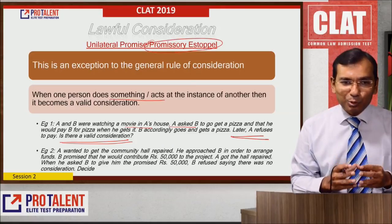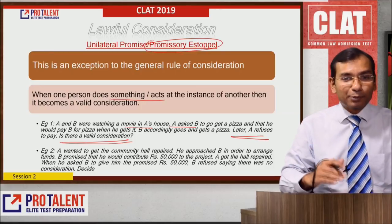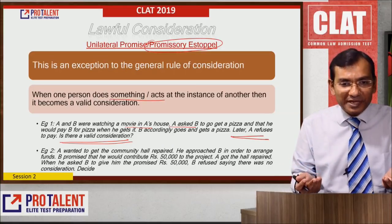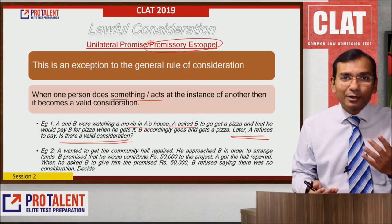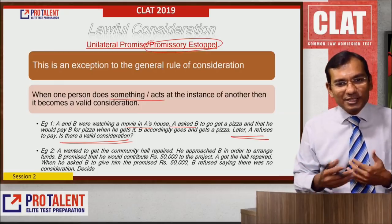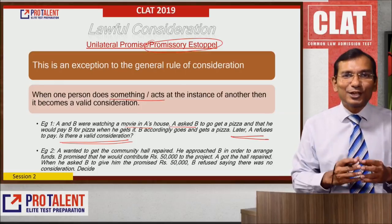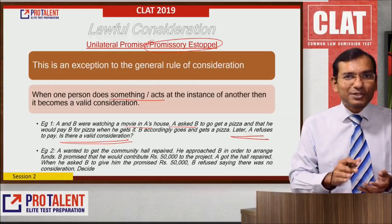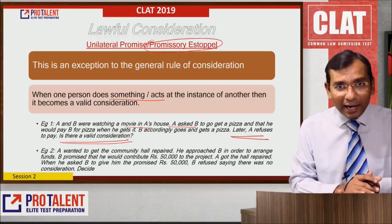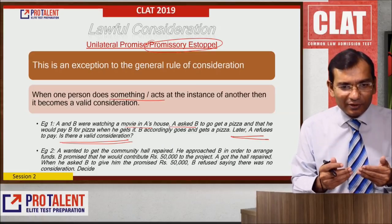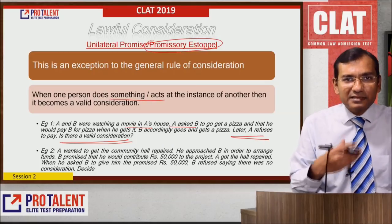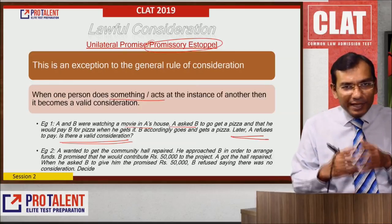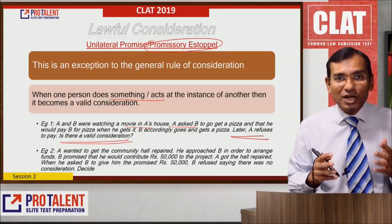Another example: A wanted to get a community hall repaired. A approached B to arrange for a fund. B promised to contribute up to Rs. 50,000 to the project. A got the hall repaired and then asked B for money, but B refused saying there was no consideration. However, B's promise is what caused A to start the work, and thereby B's promise provided the consideration for A's action. Therefore B must pay A, and it is a legal contract.